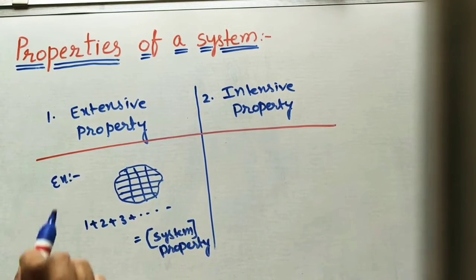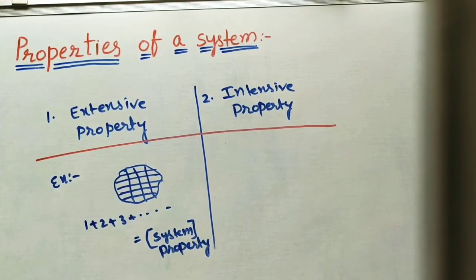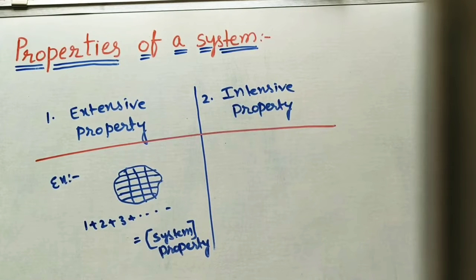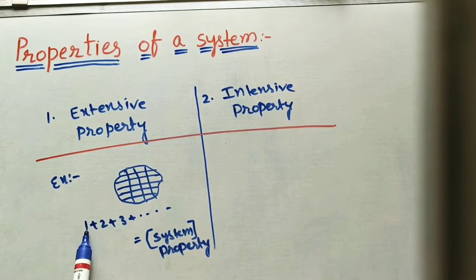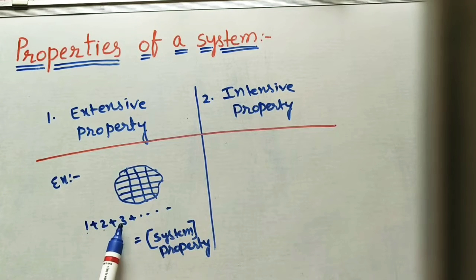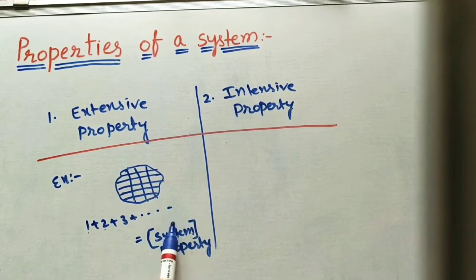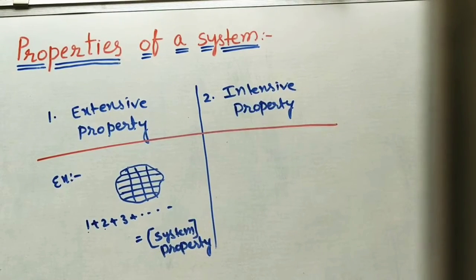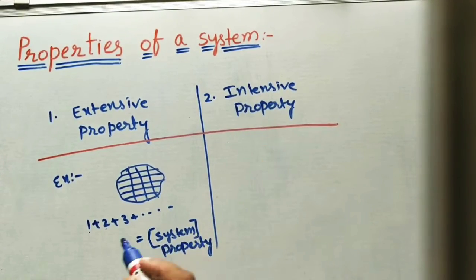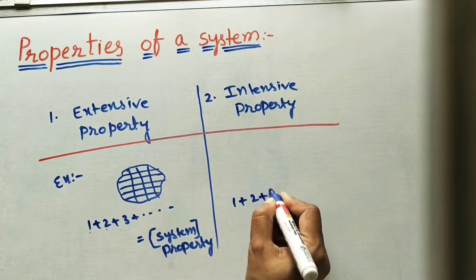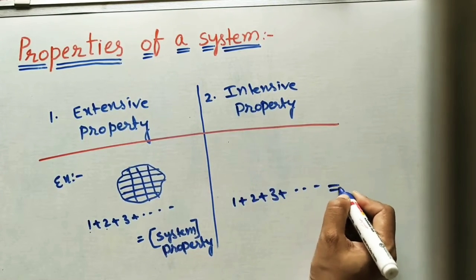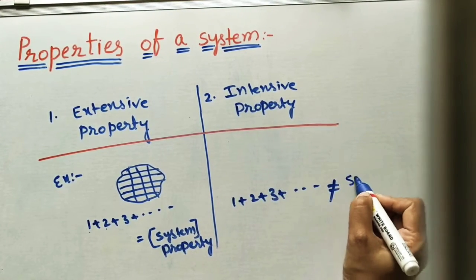So extensive property means: if you are dividing the entire system and taking individual parts, the property of first part, second part, third part — the sum will give the property of the entire system. In intensive property, this sum will not give the exact value; it will not give the system property.